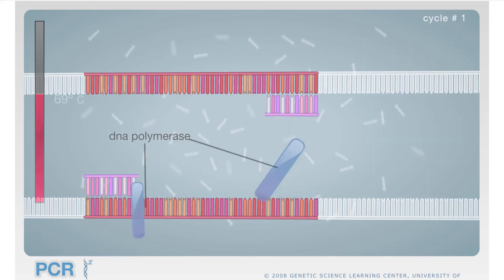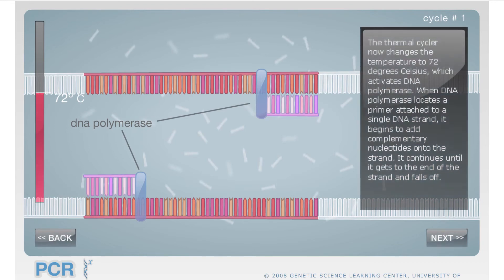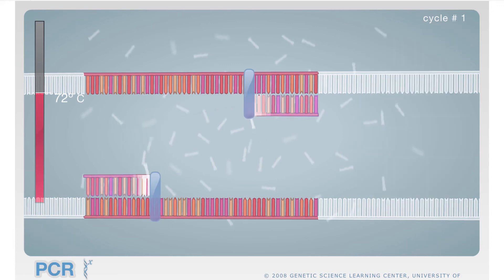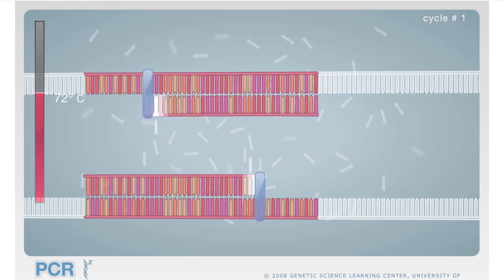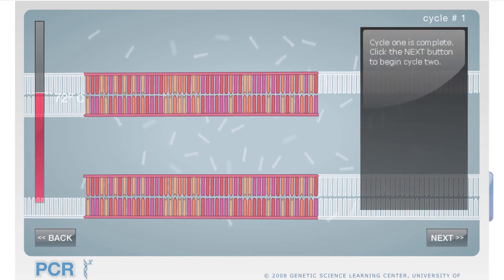Then we cycle to 72 degrees Celsius that activates a heat-resistant DNA polymerase from a bacterium called Thermophilus aquaticus. This heat-resistant polymerase is often called TAQ polymerase, T-A-Q, which stands for Thermophilus aquaticus. At this point, the polymerase will do its job in adding nucleotides to every separated strand via complementary base pairing. That ends the cycle and we created two segments.